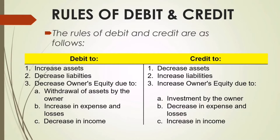On the other hand, you are going to credit if there is: number one, decrease in assets; number two, increase in liabilities; and number three, increase in owner's equity due to the following circumstances: letter A, there is an investment by the owner; letter B, there is a decrease in expenses and losses; and letter C, if there is an increase in income.